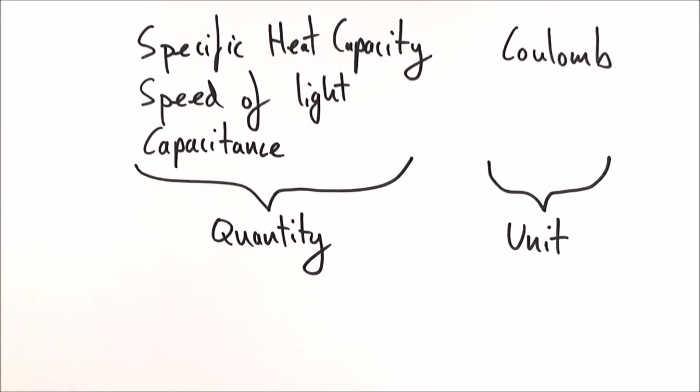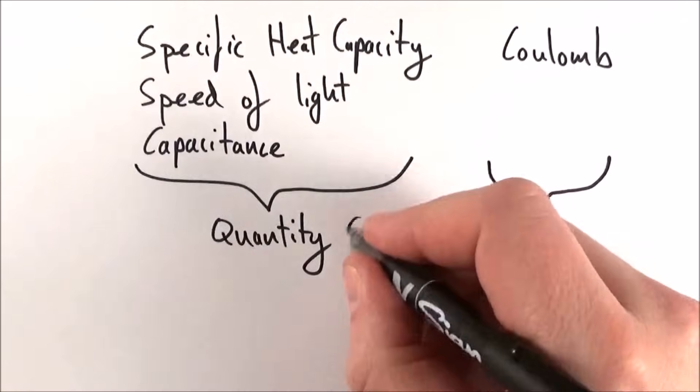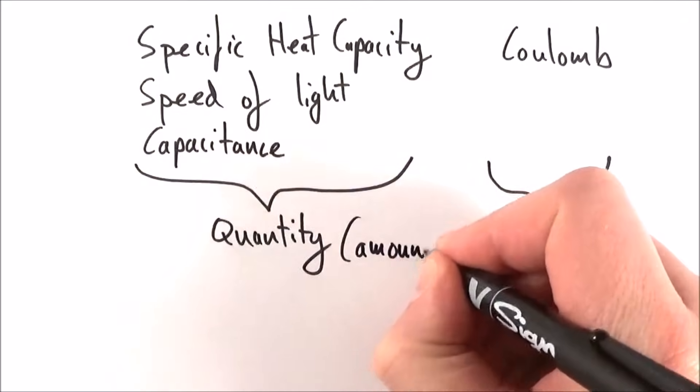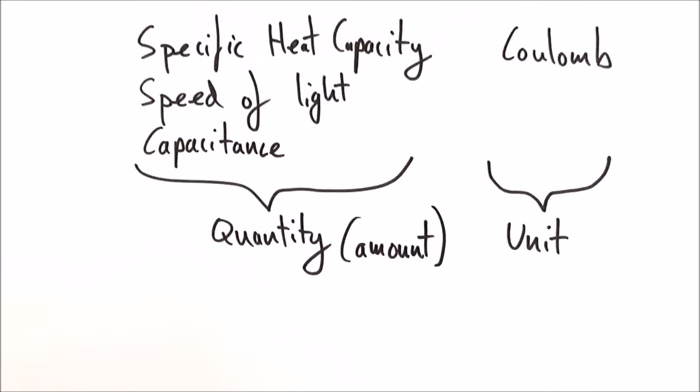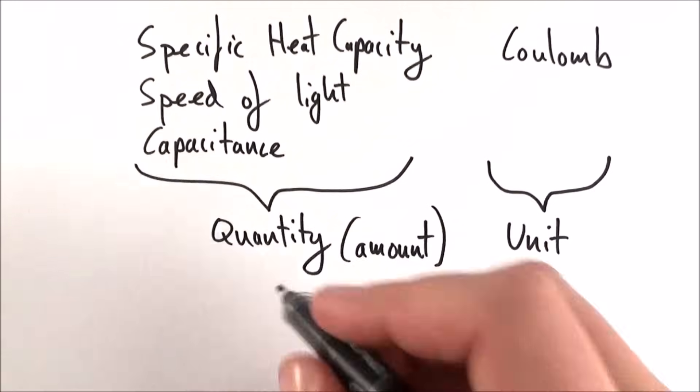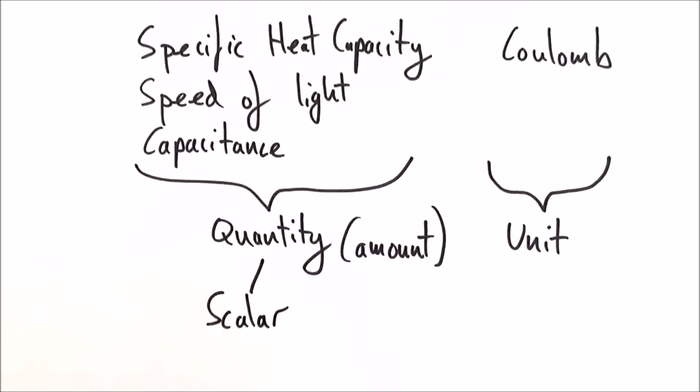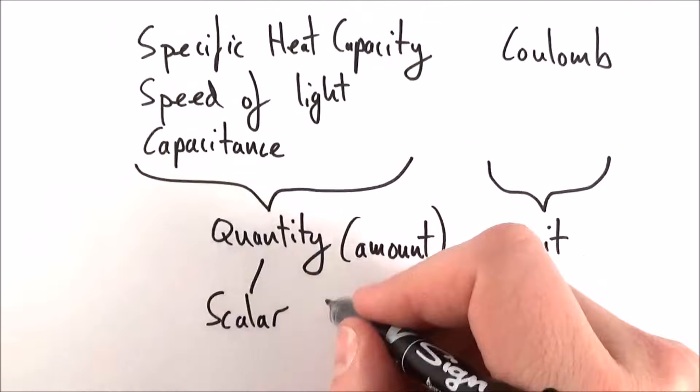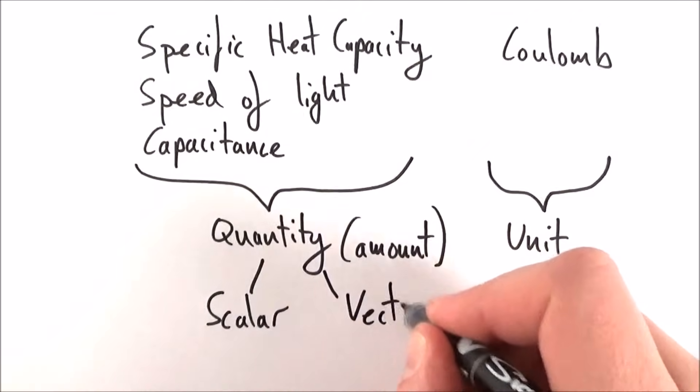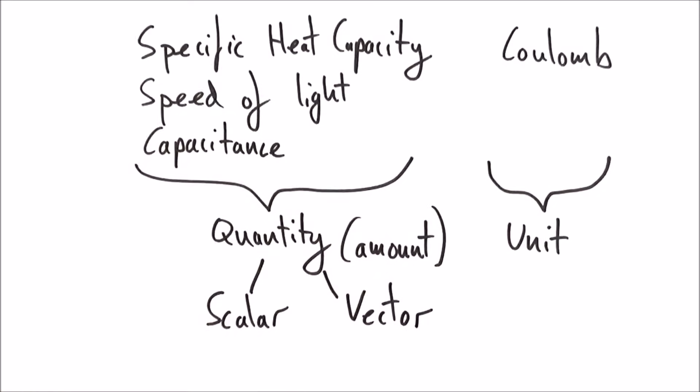We can think about quantities in two ways. It is the amount of something. Now, some things are fairly straightforward, some things are a bit more abstract, but we can really think about things that just depend on the amount of something, perhaps like the mass of an object, or we can also think about things that depend on the direction, like velocity or acceleration. So we can really think about quantities in terms of scalar or vector quantities.